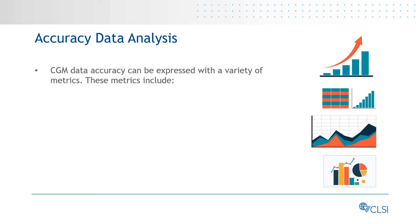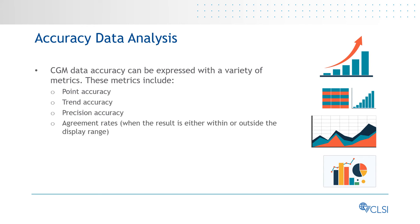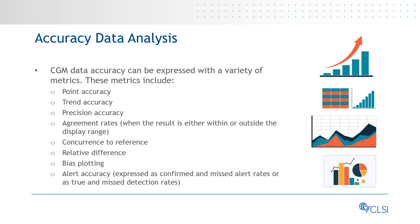CGM data accuracy can be expressed with a variety of metrics. These metrics include point accuracy, trend accuracy, precision accuracy, agreement rates when the result is either within or outside the display range, concurrence to reference, relative difference, bias plotting, and alert accuracy expressed as confirmed and missed alert rates or as true and missed detection rates.